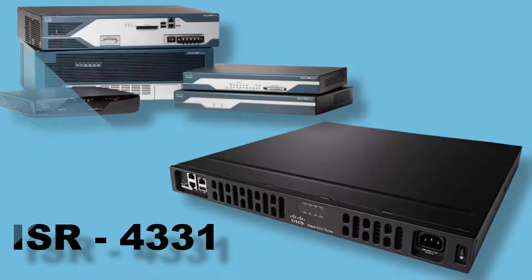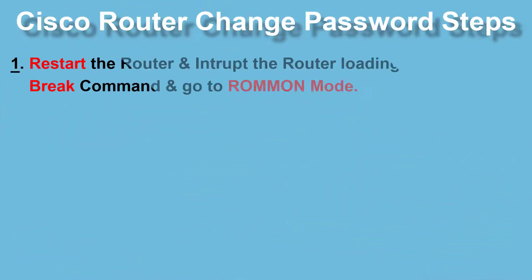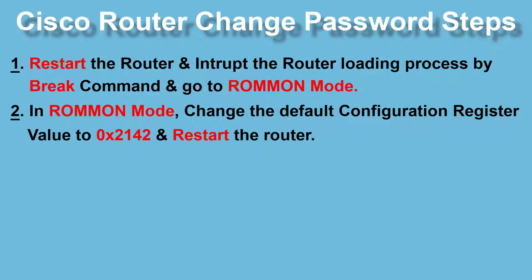To change the password in a Cisco router, steps are like this: restart the router — power it off and on — and interrupt the router loading process using the break command. In ROMMON mode, change the default configuration register value to 0x2142, and then restart the router to take effect.